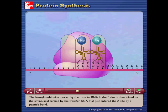The formyl-methionine carried by the transfer RNA in the P-site is then joined to the amino acid carried by the transfer RNA that just entered the A-site by a peptide bond.